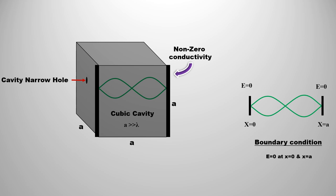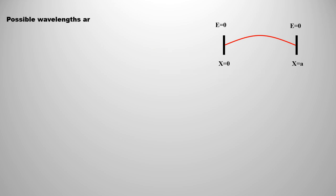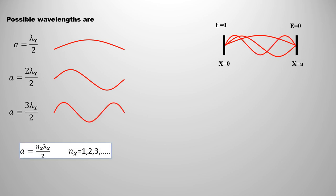Let's first calculate how many modes of radiation are in the cavity. To calculate how many modes of standing waves will be possible in the cavity, we will first consider those standing waves which are present in the x direction. To be a standing wave between two walls of the cavity, it is necessary to have node points on both walls. If we assume the wavelength of the standing wave in the x direction is lambda_x, then the longest wave possible between the two walls will be lambda_x divided by 2. The next possible wave will have length 2 times lambda_x divided by 2. In general, the length of the wave in the x direction will be n_x times lambda_x divided by 2.